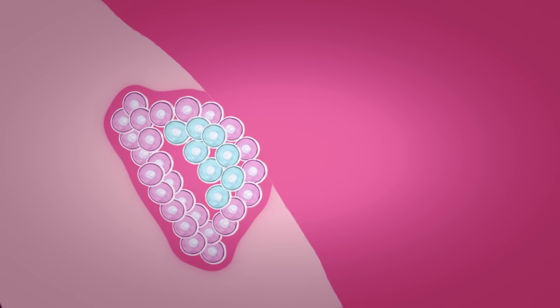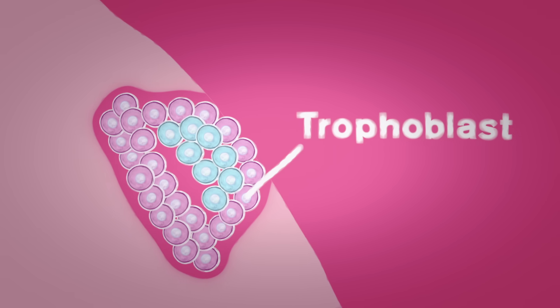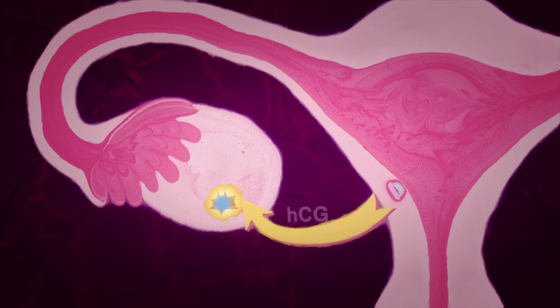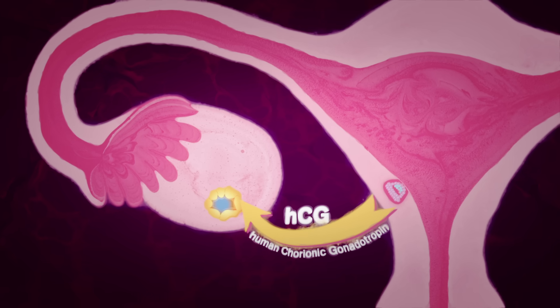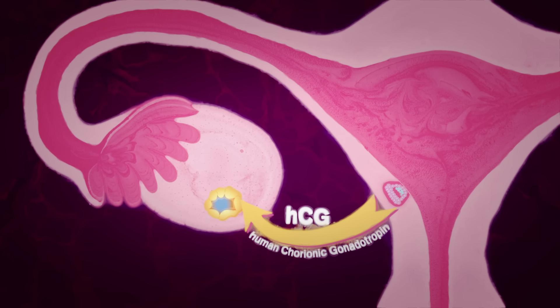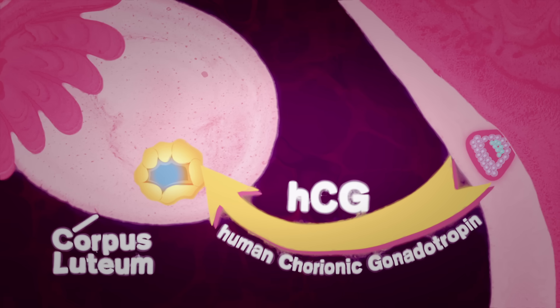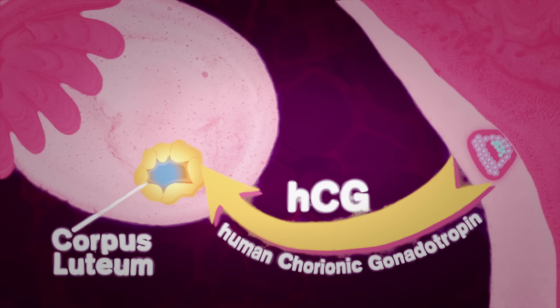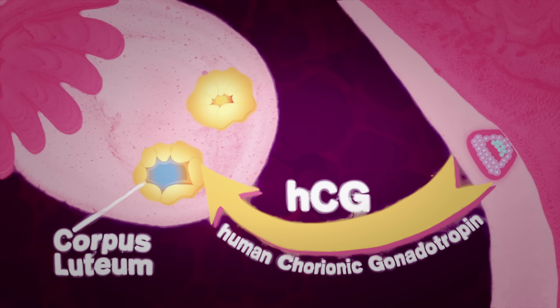Once implanted, the cells that are to become the placenta secrete a hormone that signals to the ovulated follicle that there is a pregnancy in the uterus. This helps rescue that follicle, now called the corpus luteum, from degenerating, as it normally would do in that stage of the menstrual cycle.